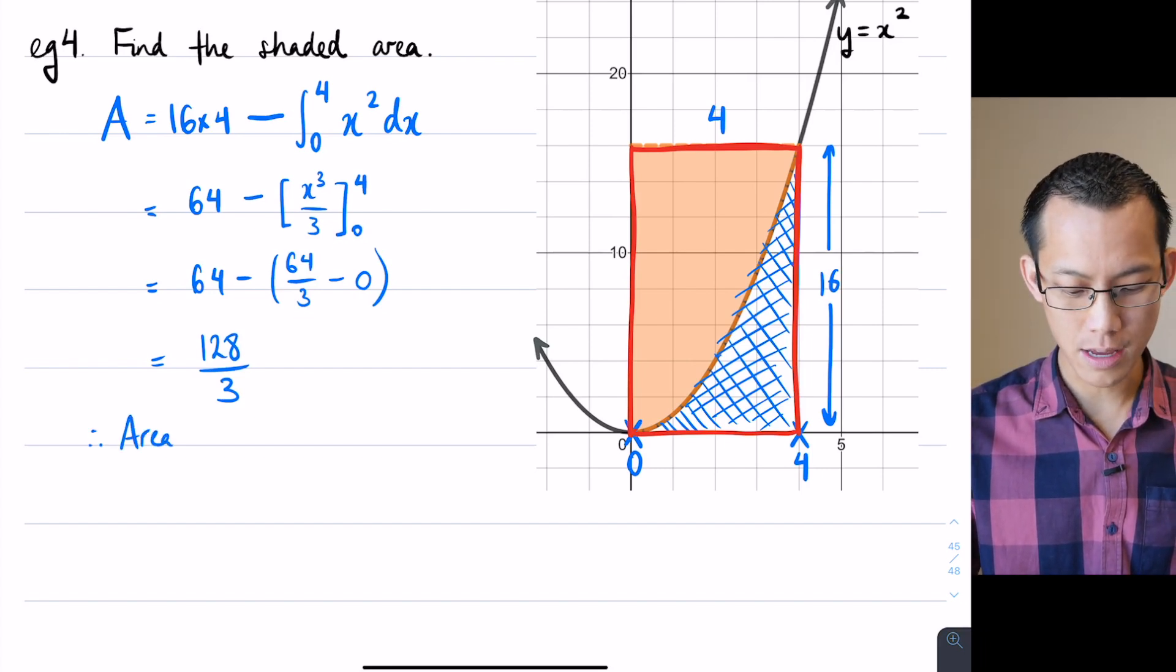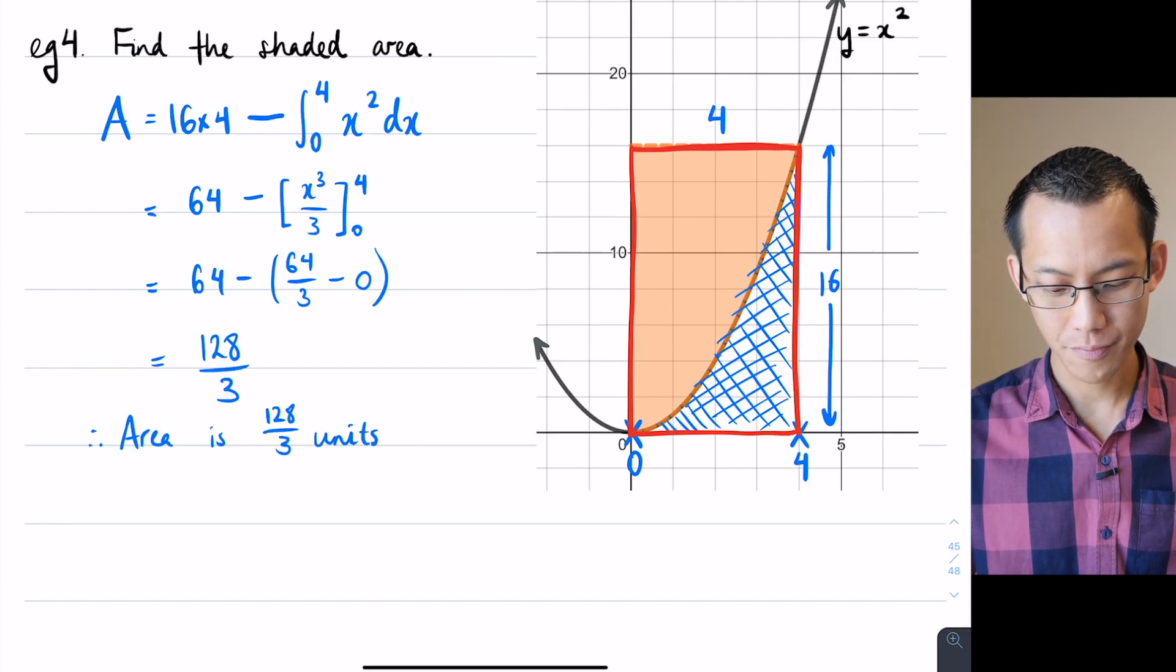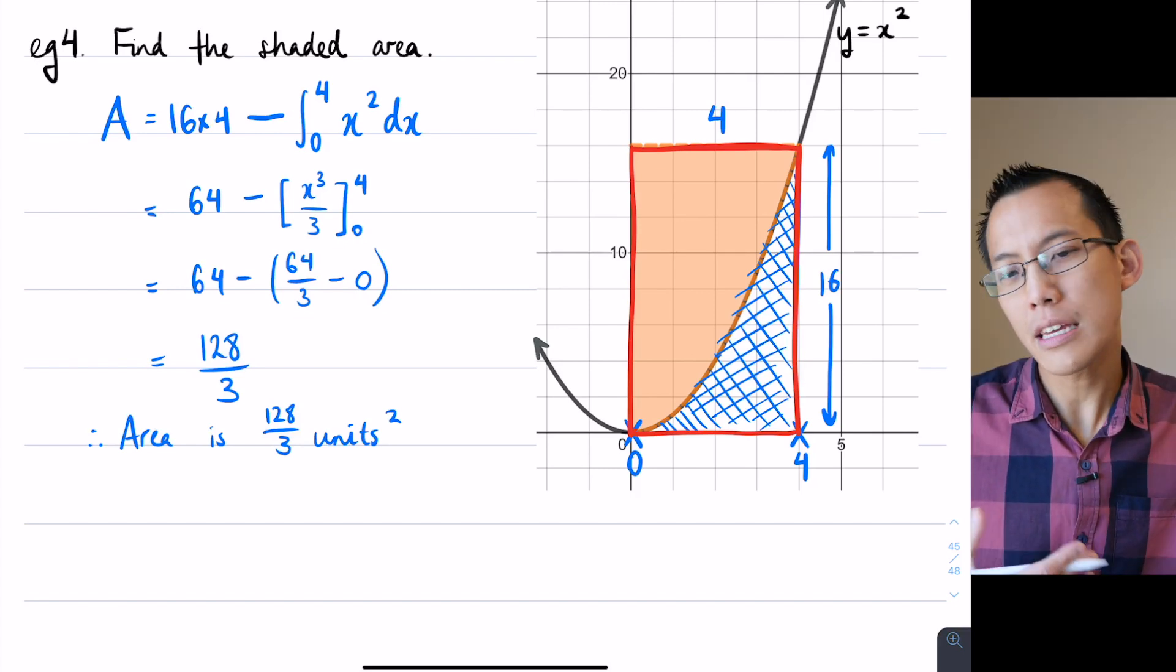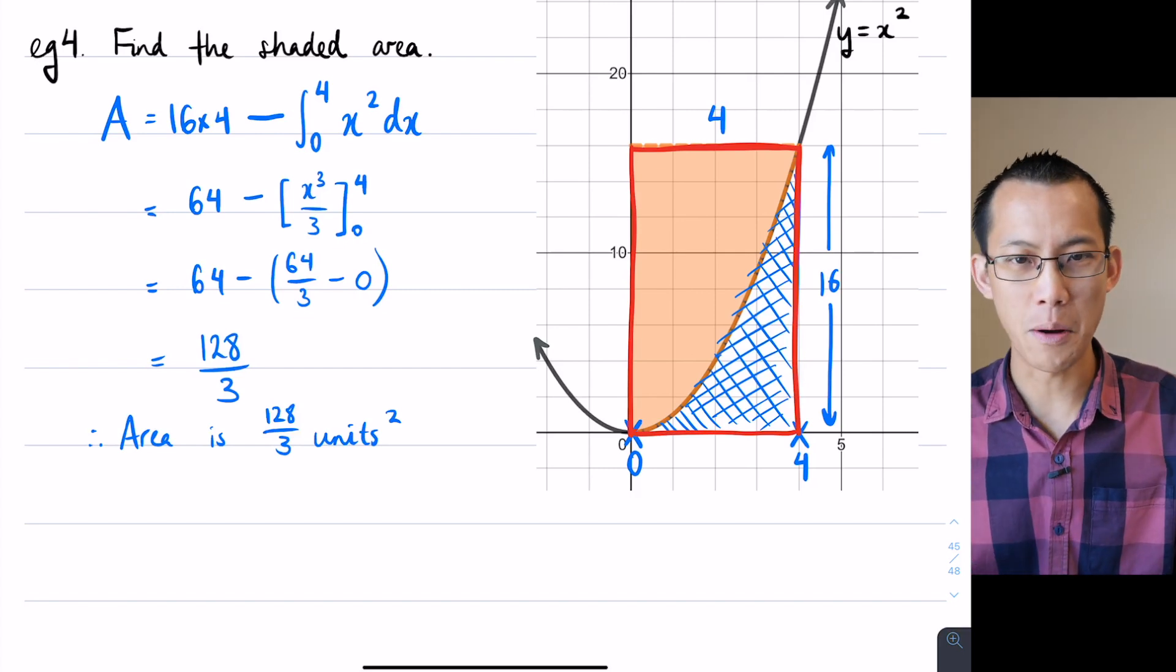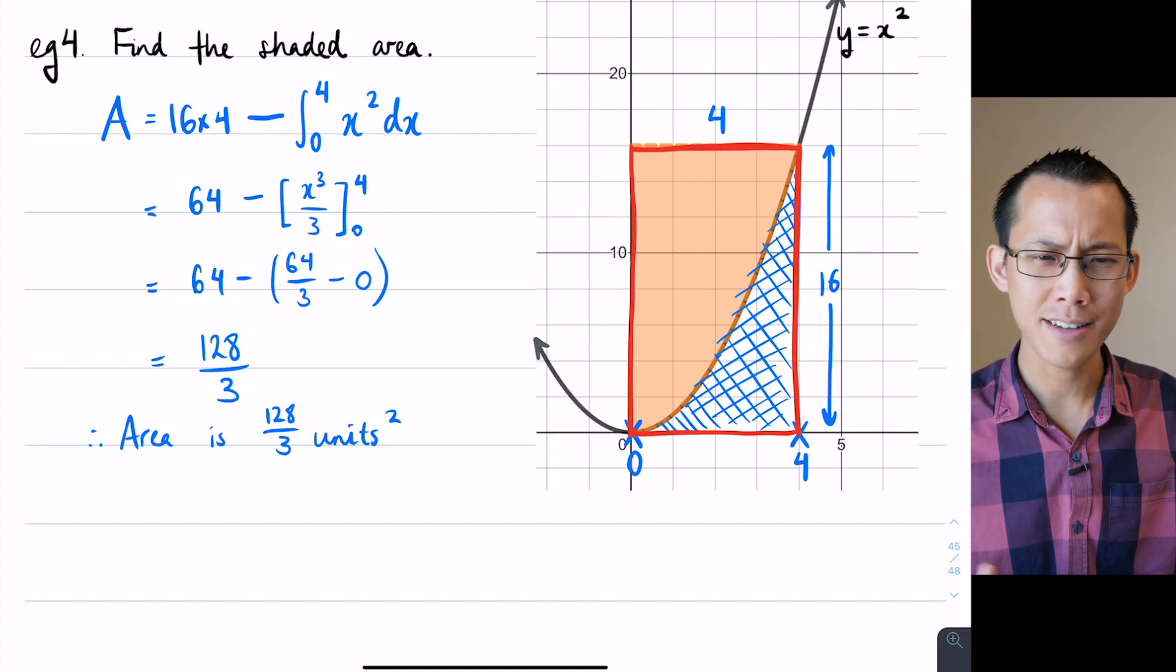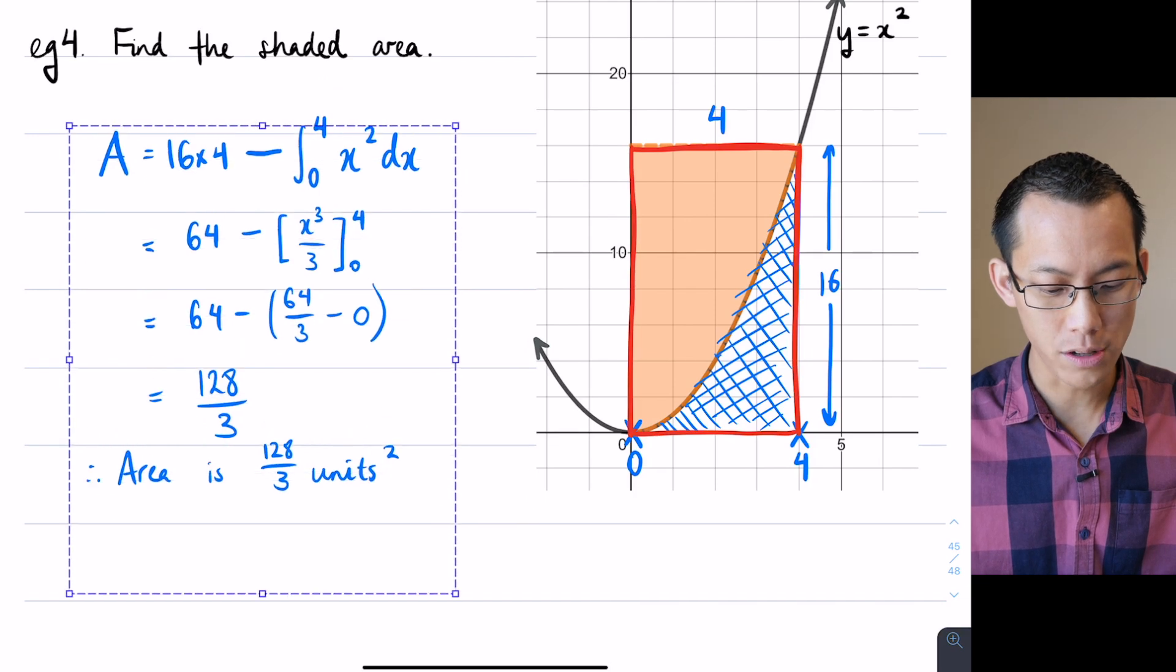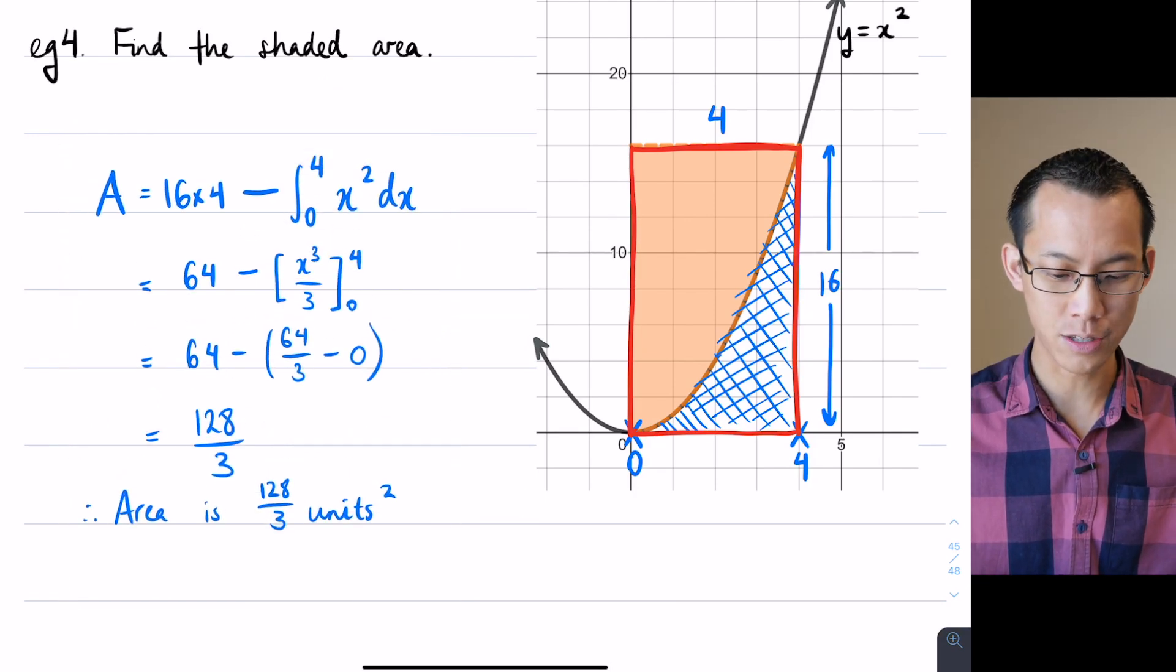So this is a way that we can evaluate this area. It's kind of indirect, we worked out the area by working out what the area isn't and then doing a bit of subtraction, but it works fine and it uses all of the knowledge that we've already developed.